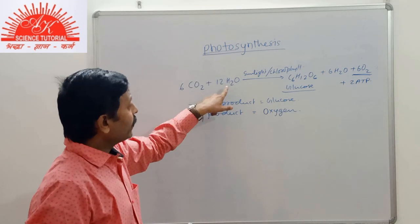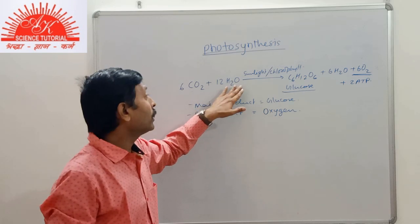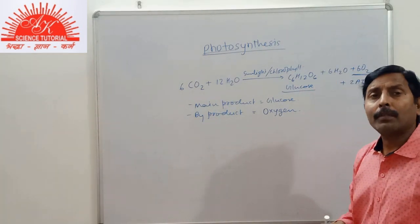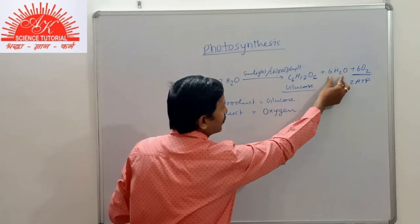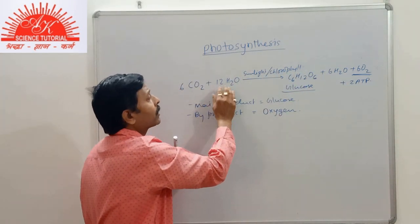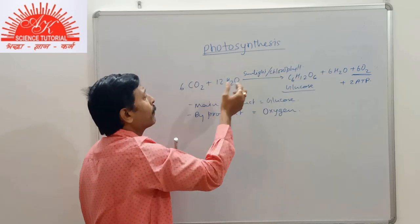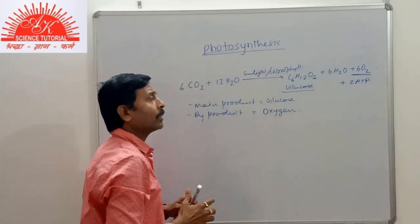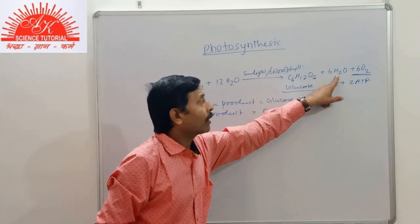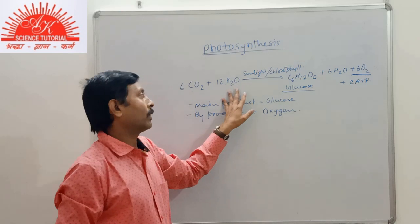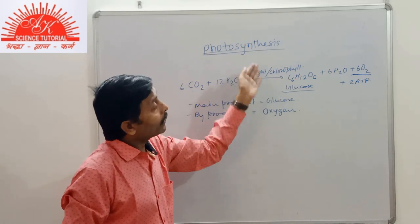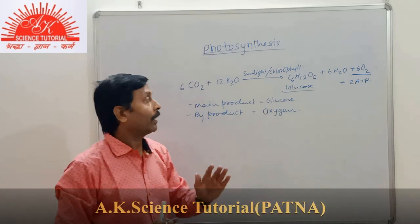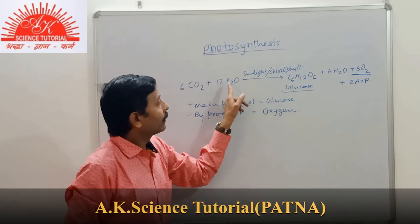On the reactant side we use 12H2O, and on the product side we have written 6H2O again. Many students write only 6CO2 + 6H2O giving glucose and oxygen, but this is not correct because the water molecule on the product side is not leftover water — it is the water formed during the process of photosynthesis. Therefore, it must be written correctly. There should be no confusion about the writing of the equation.